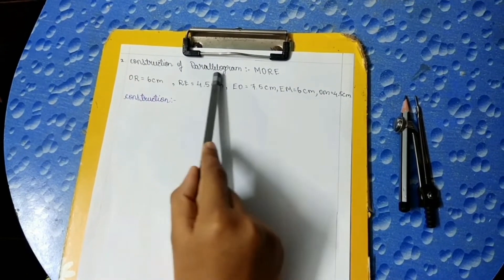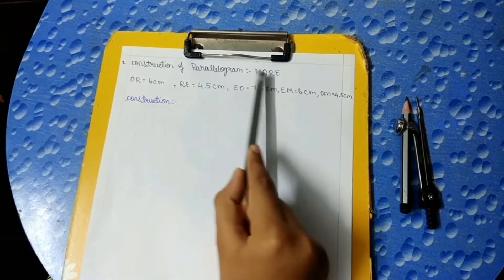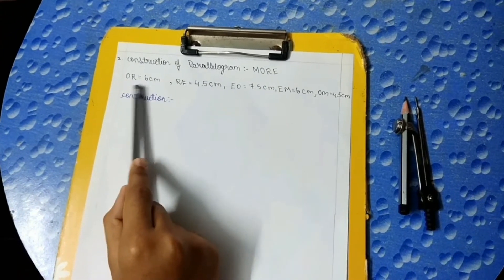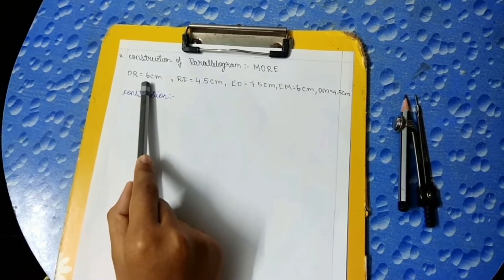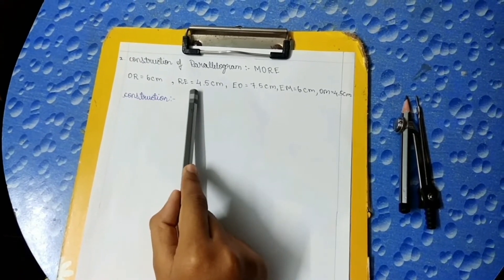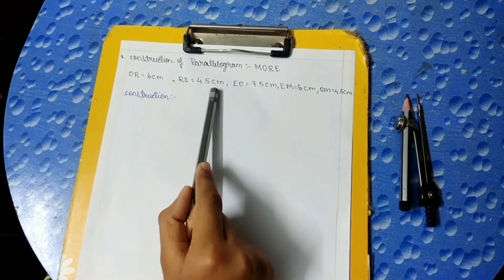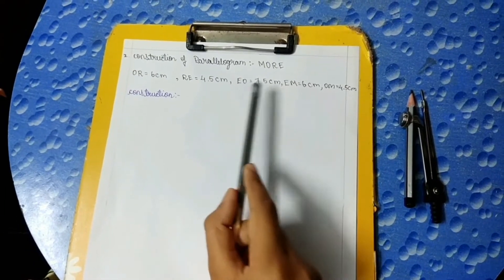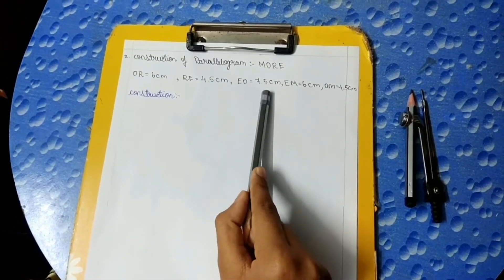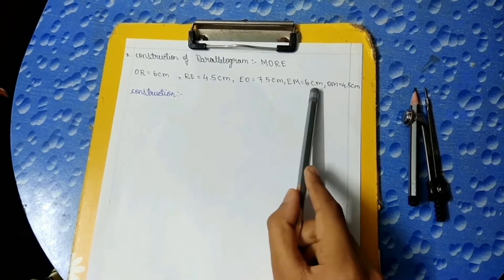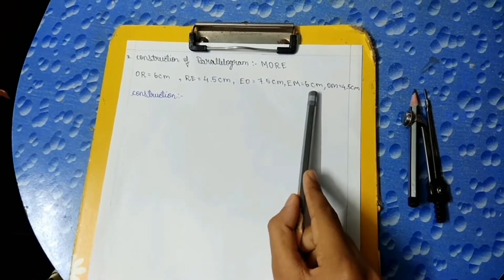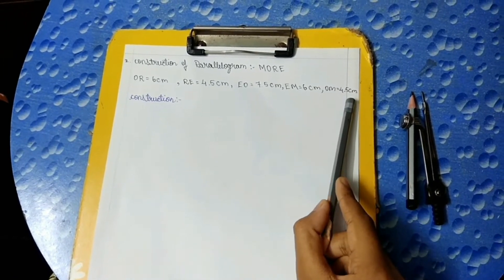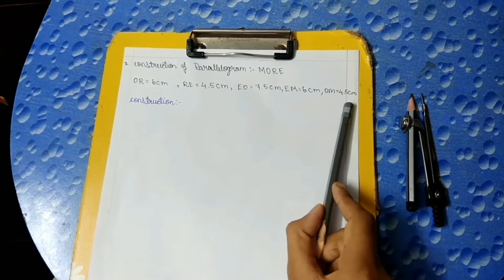Construction of parallelogram MORE. OR is equal to 6 cm, RE is equal to 4.5 cm, EO is equal to 7.5 cm, EM is equal to 6 cm, and OM is equal to 4.5 cm.